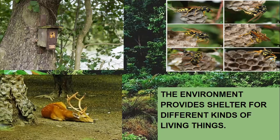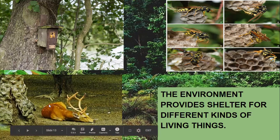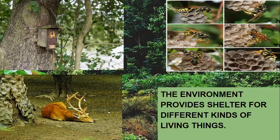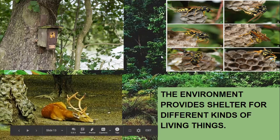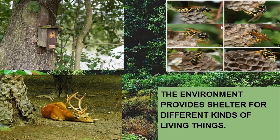In this slide, you can see that the environment provides shelter for different kinds of living things — birds, deer, any insect. Imagine if there is no forest. If the trees are cut down, the nests which are there for the birds will also be destroyed and there will be no home for birds. The deer is sitting relaxed only in the forest. If there is no forest, there will be no home for the deer. The honeybee also will make a honeycomb in a suitable environment like the forest. All the shelters are being provided to all these kinds of living things in the environment.